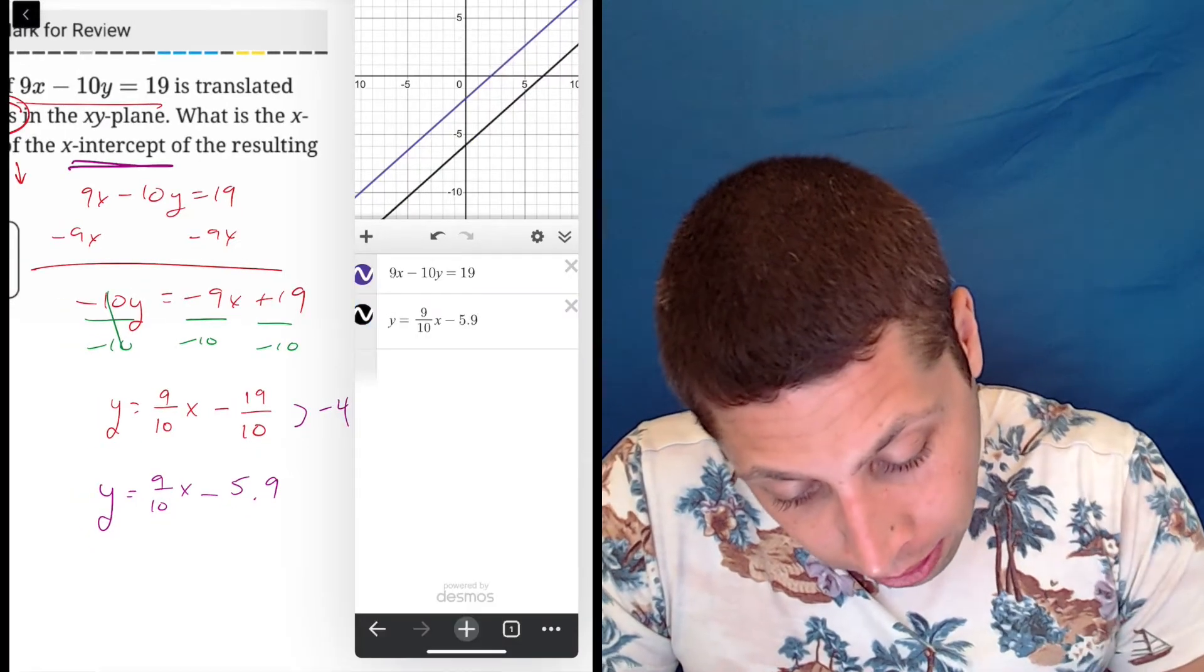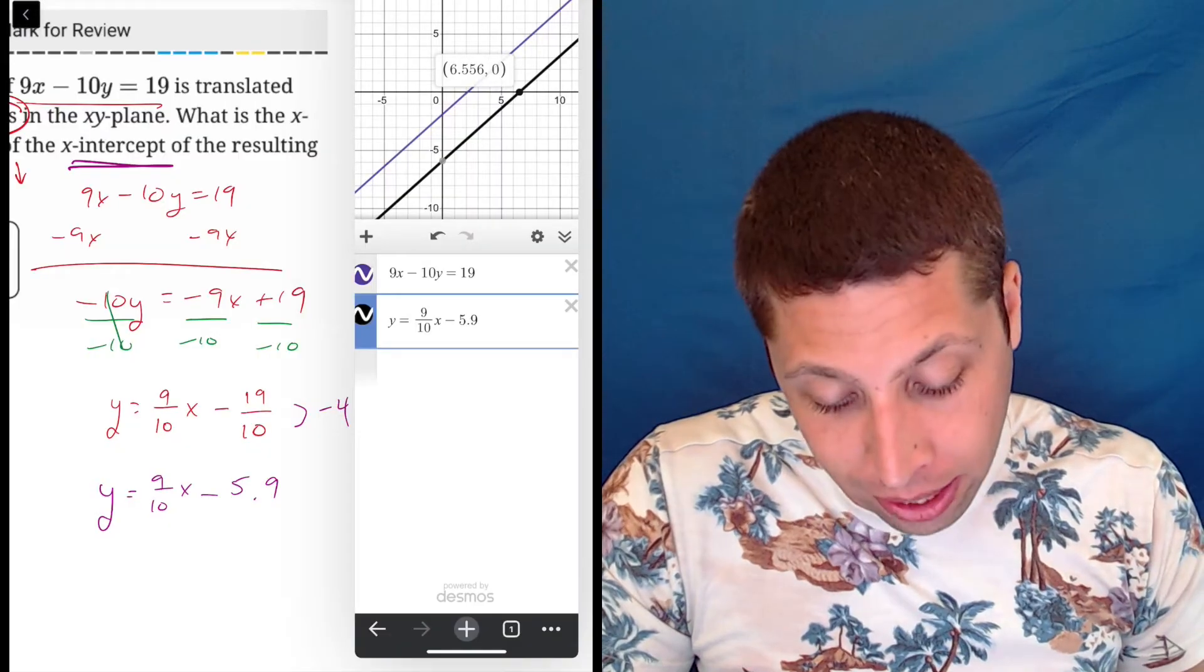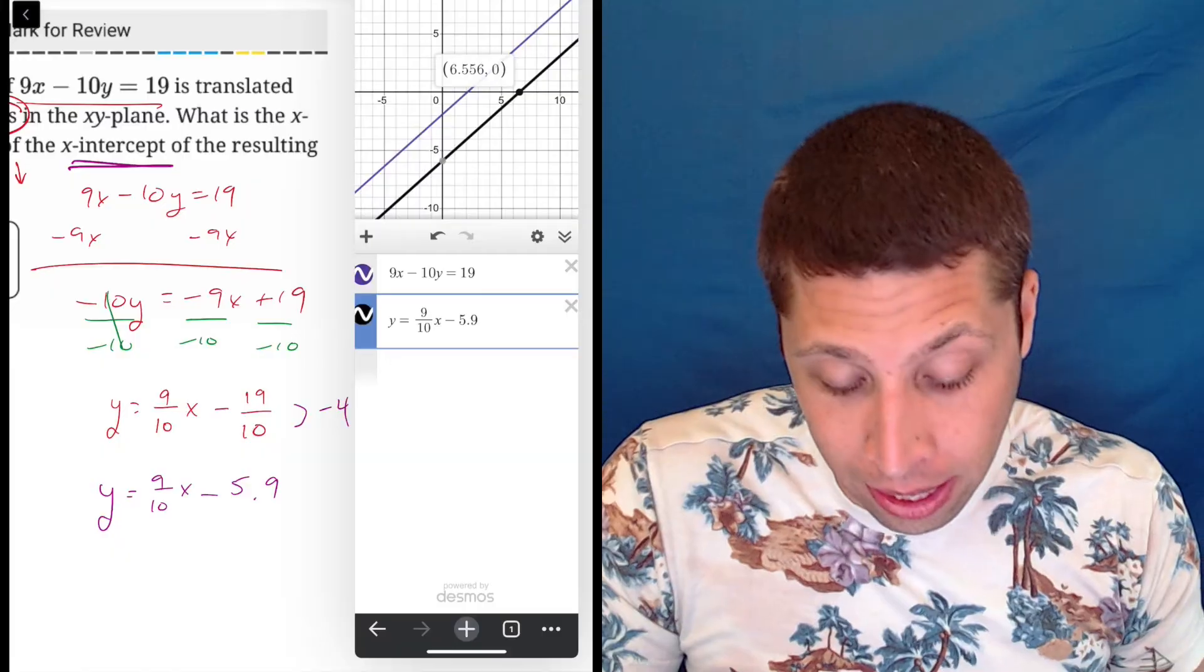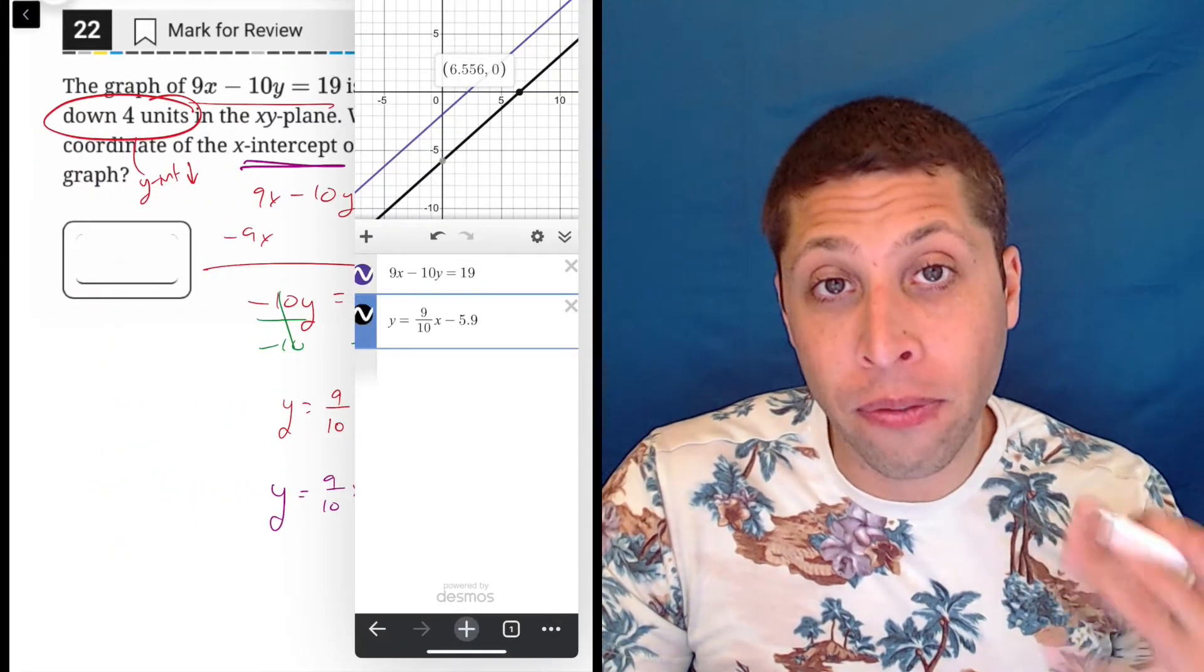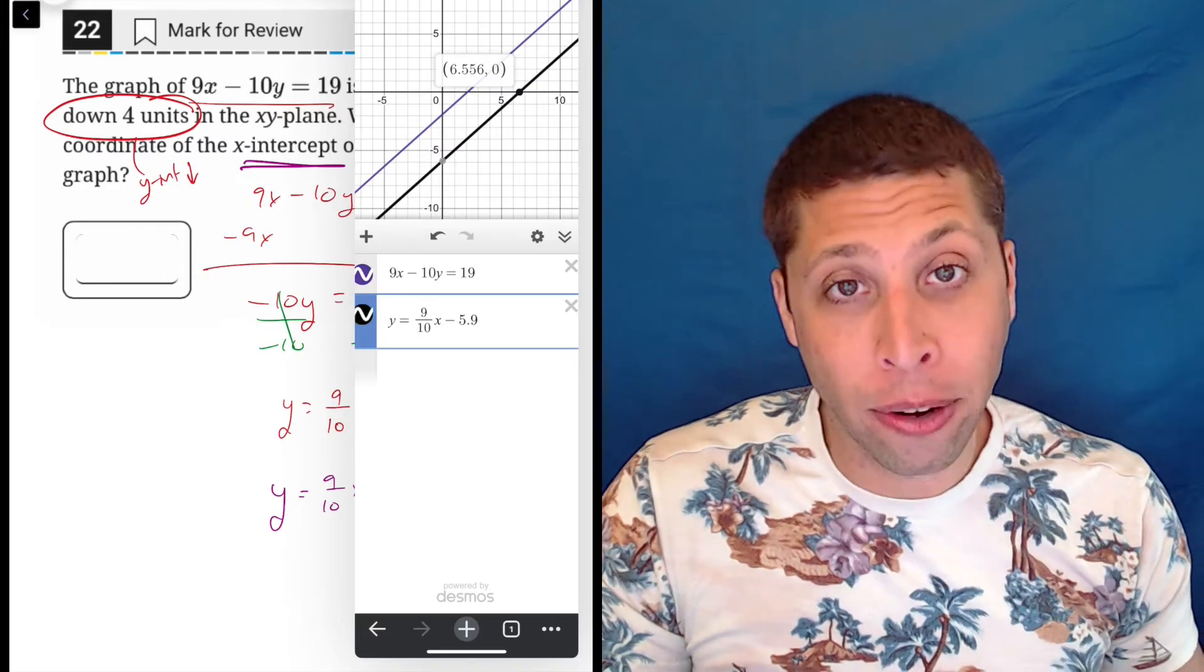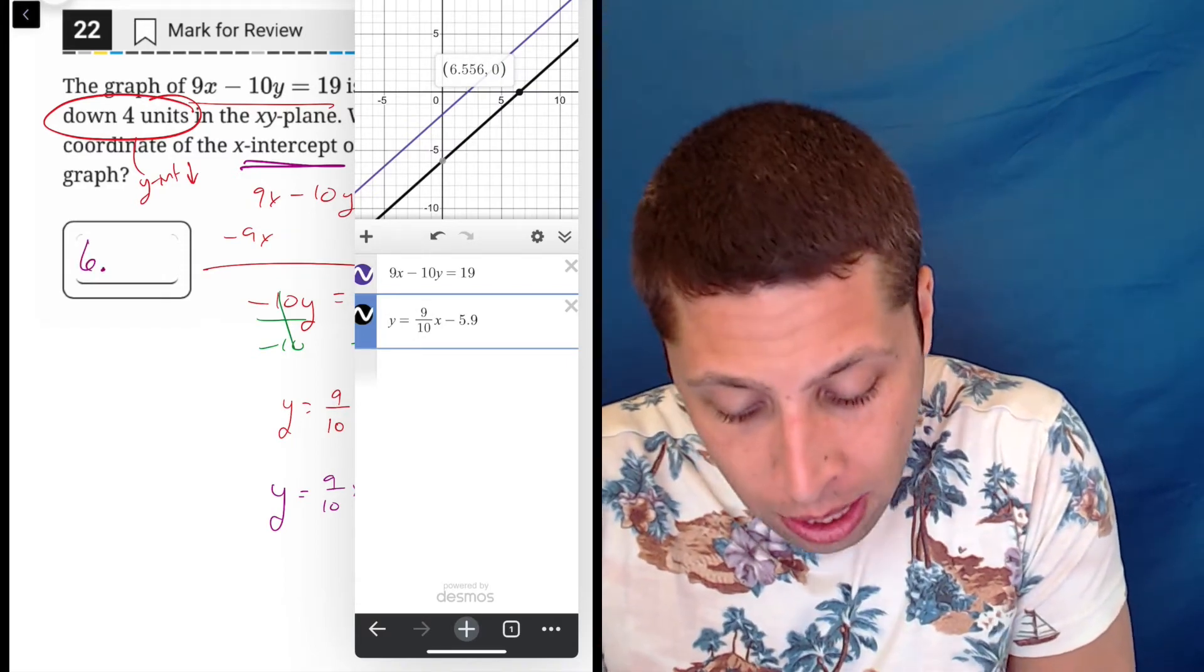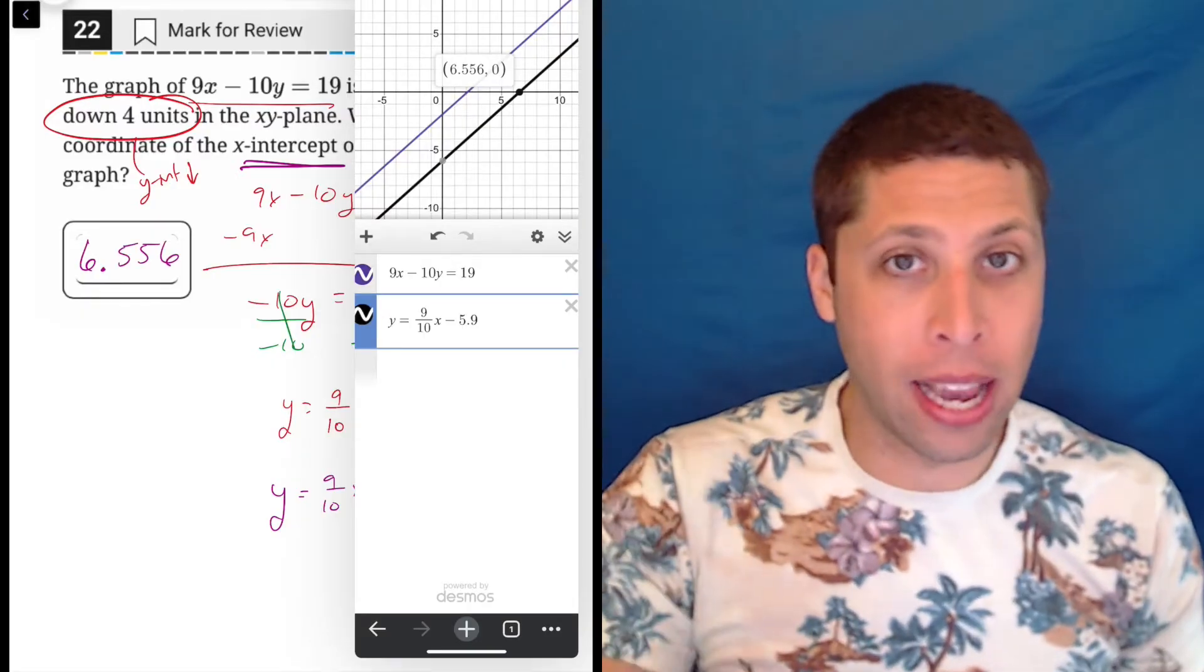So the X intercept's right here and it's this number 6.556, which I believe is acceptable to the SAT because of the way that these student-produced response things work. You need to fill up all the spaces and without a negative, there are five spaces. So 6 is one, point is another, 5, 5, 6, right? So the decimal point counts as a space.